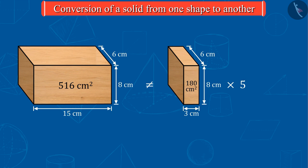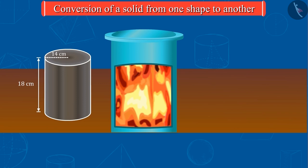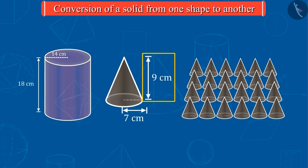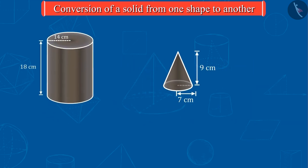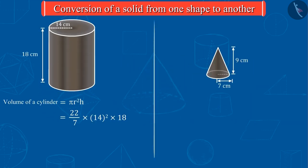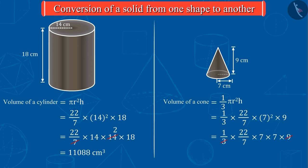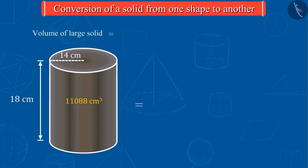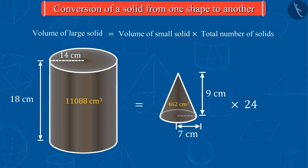Let's look at an example. If we melt this iron cylinder and make 24 cones of height 9 cm and radius 7 cm and then calculate their volumes, we will realise that this statement proves to be true even in this case.